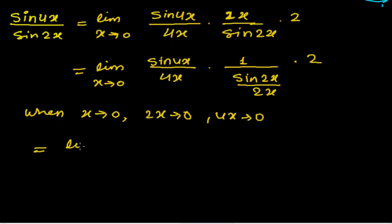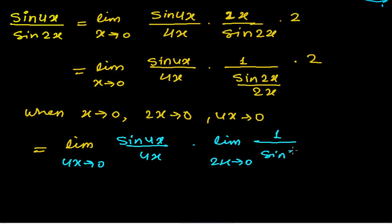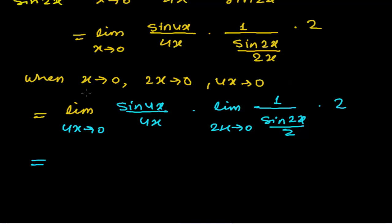Now I am plugging the value of the limit. I can write: limit when 4x tends to 0, sin 4x divided by 4x; again, limit when 2x tends to 0, 1 divided by sin 2x upon 2x times 2. This is a constant, so the limit of the constant is the same constant value. Limit of 4x tends to 0, sin 4x over 4x, I can write 1. Here also, limit when 2x tends to 0, 1 divided by sin 2x upon 2x, that is 1 divided by 1 times 2.